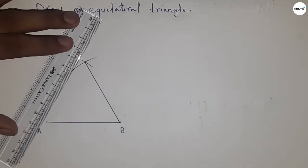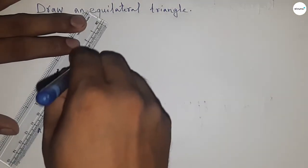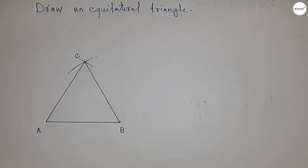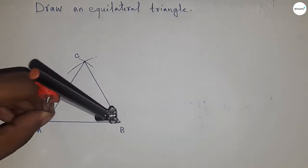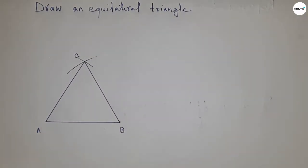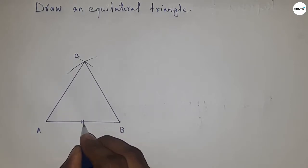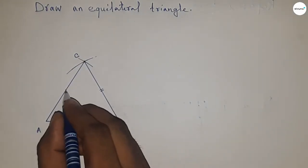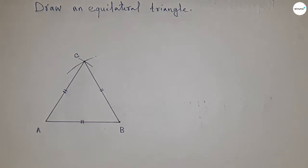And joining this side. So we got a triangle. Now checking whether all sides are equal or not. So all sides are equal - this side and this side and this side are equal.